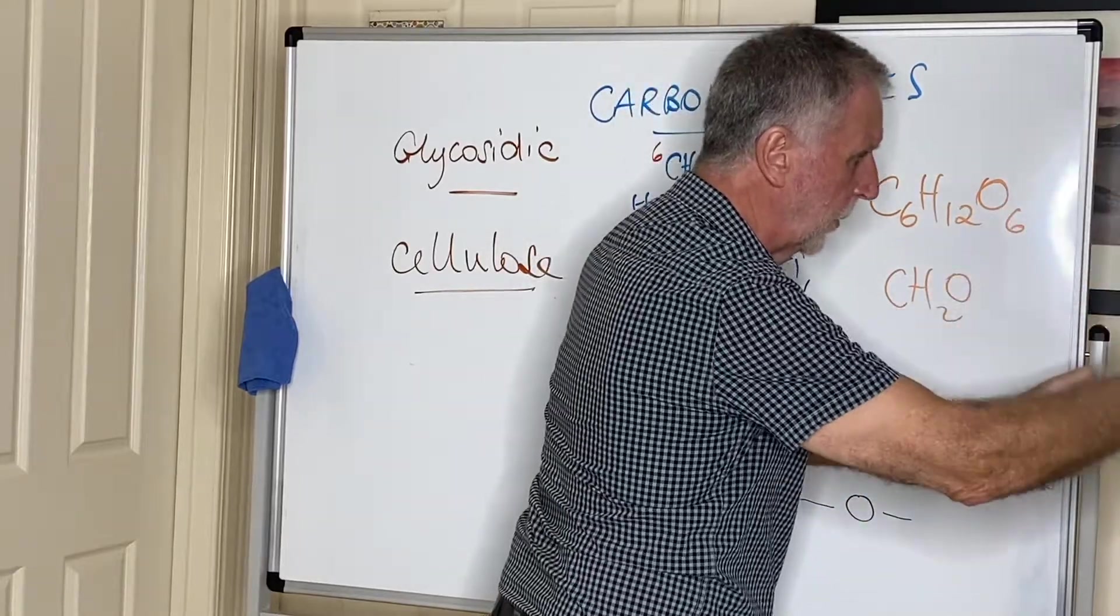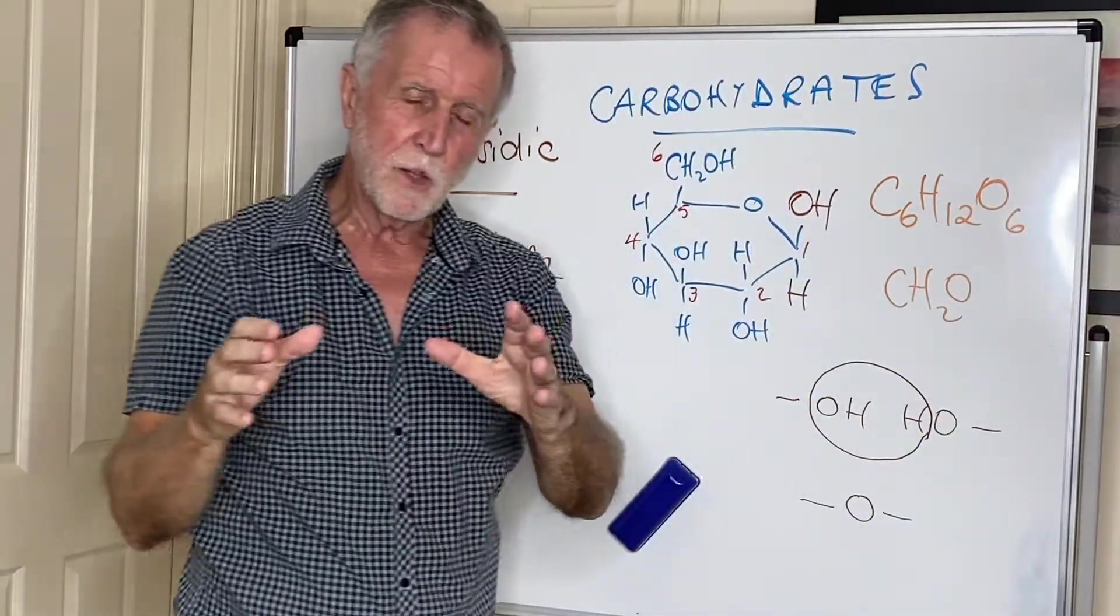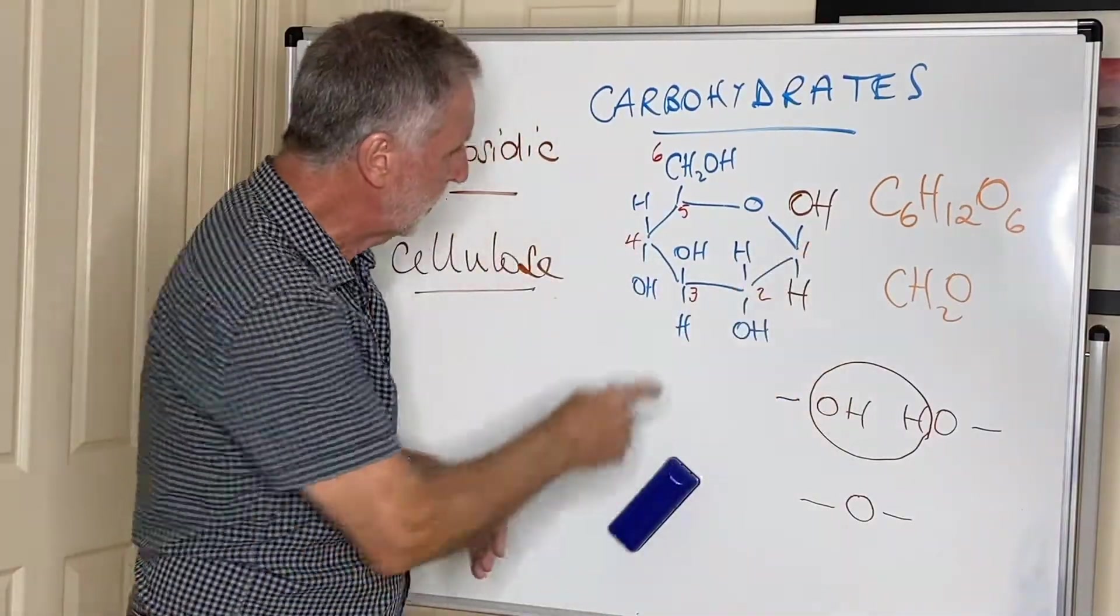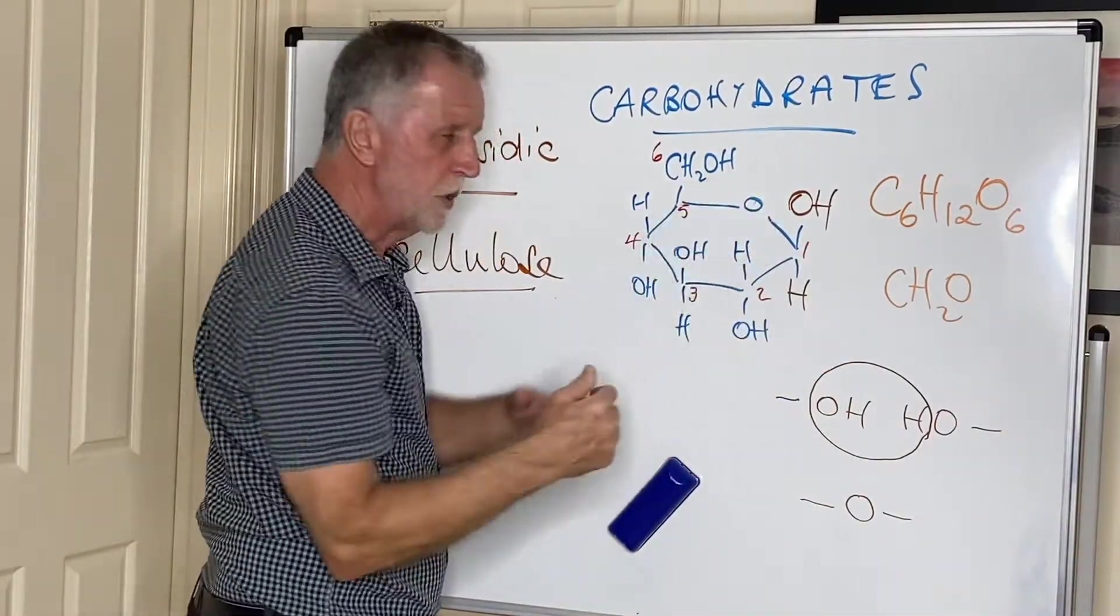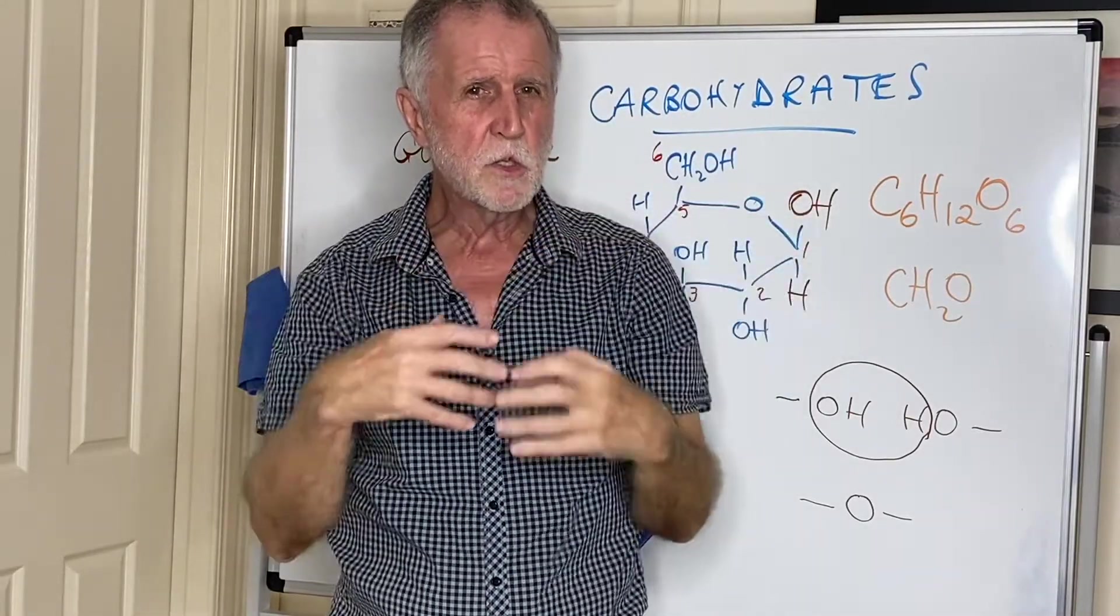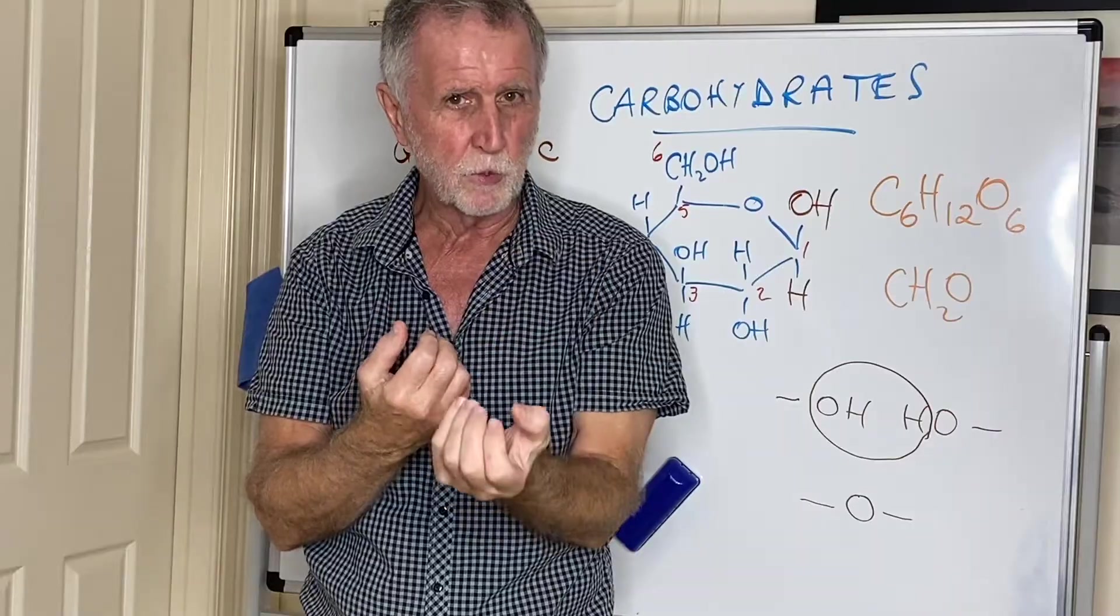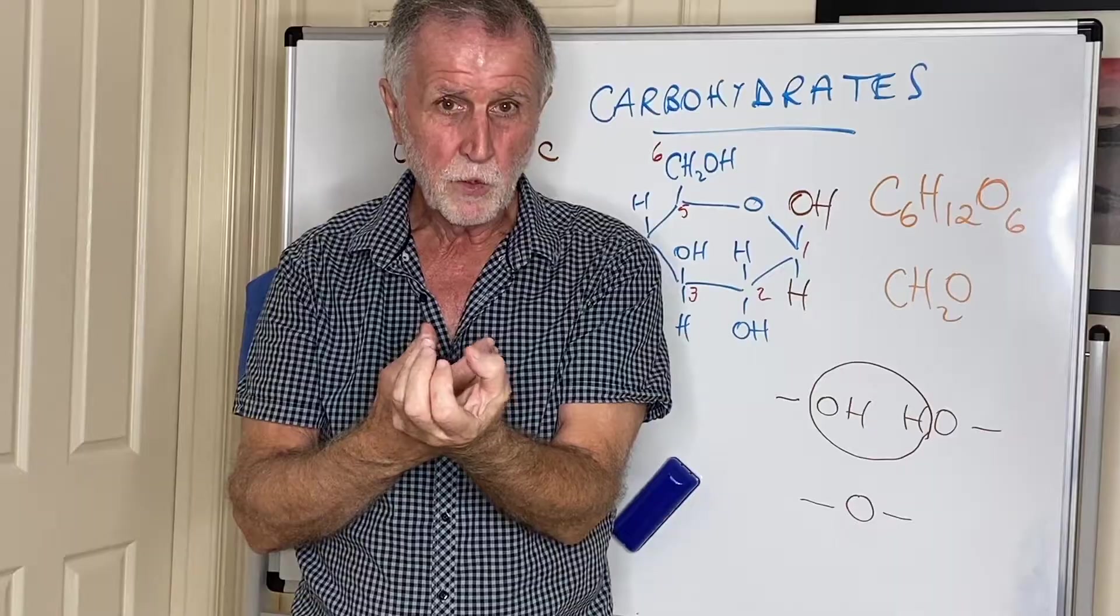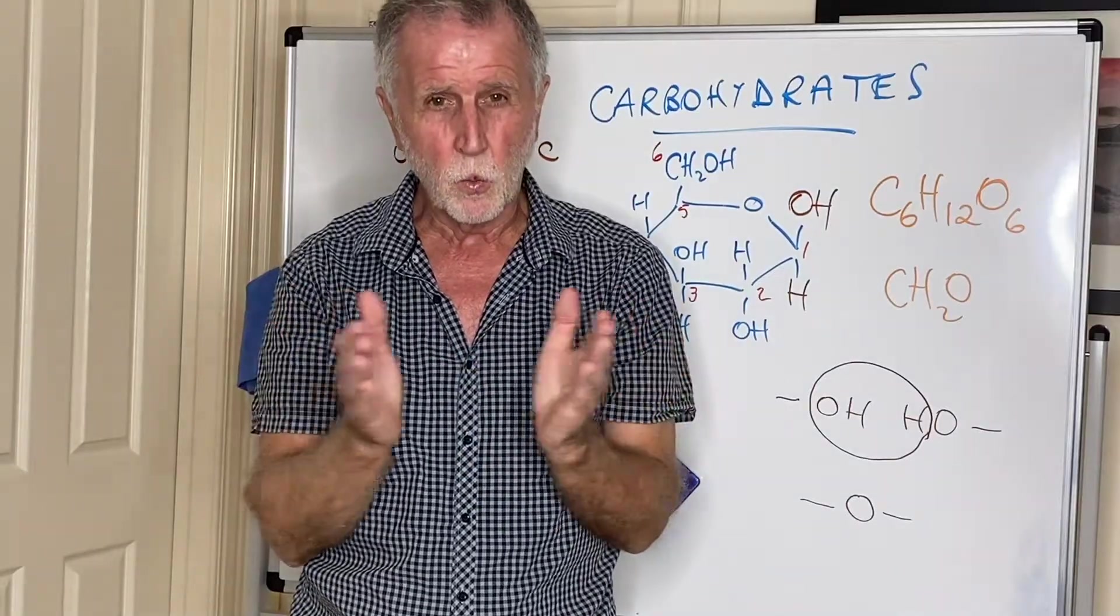And that gives an incredibly straight chain which allows so many of these OHs to interact with the ones on the neighboring chain. That causes tremendous attraction, and that gives cellulose its strength, its rigidity, and its complete insolubility in water.